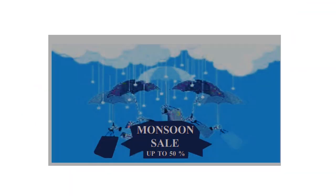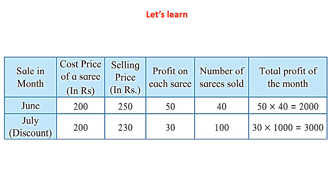Now we will look at a sale — months on sale, up to 50 percent discount. Let us understand the real situation. Consider a sale with cost price of a saree, selling price, profit on each saree, number of sarees sold, and total profit.